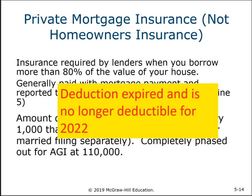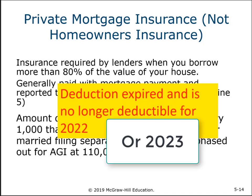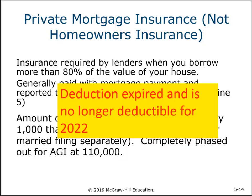Private mortgage insurance — the insurance required by lenders when you borrow more than 80% of your home's value — used to be deductible as interest under a separate category. However, it expired at the end of 2021 and is not deductible for 2022. Many provisions in the tax law are temporary, and if Congress doesn't renew them, they simply expire.